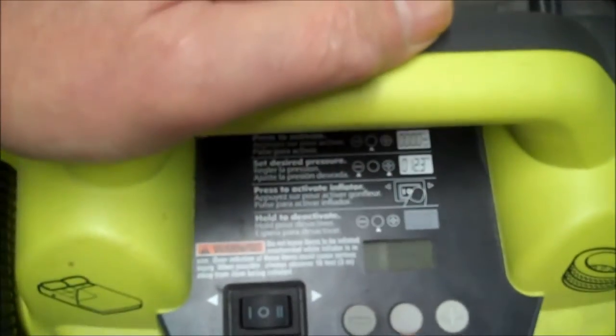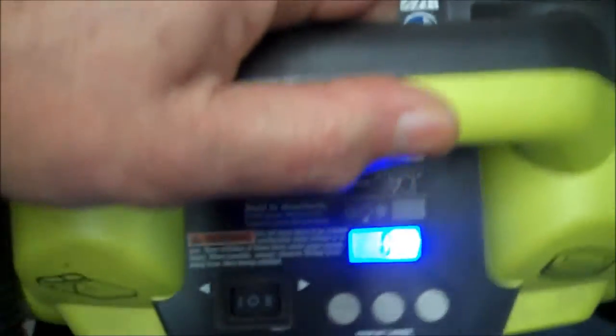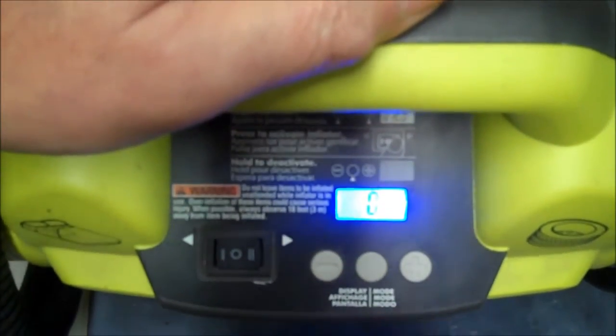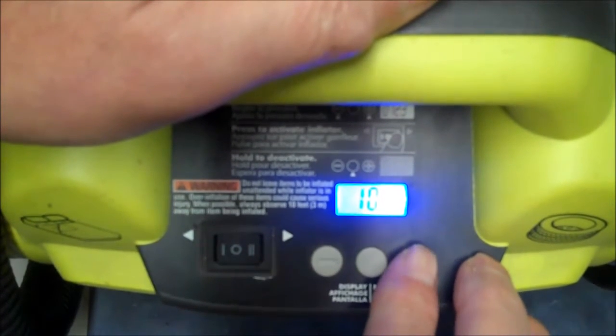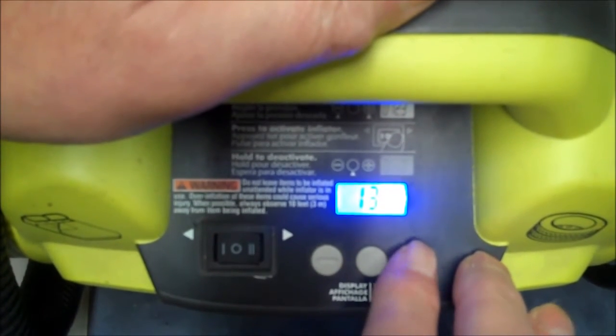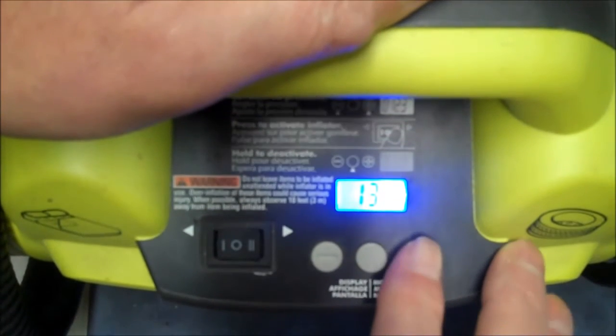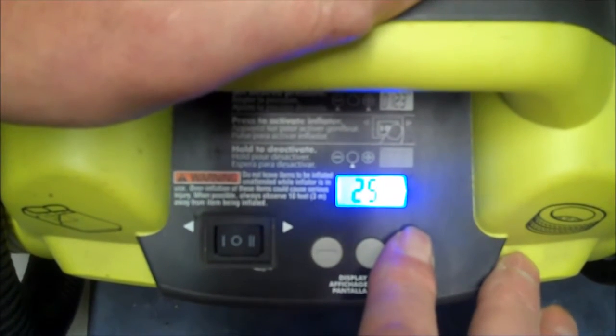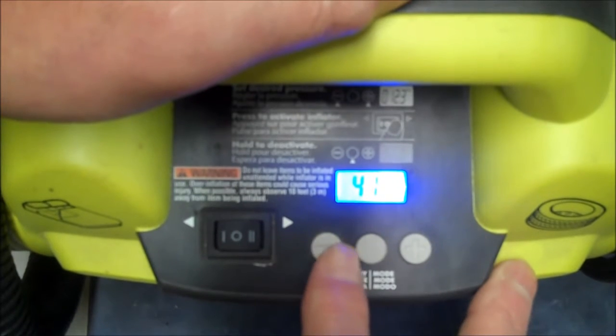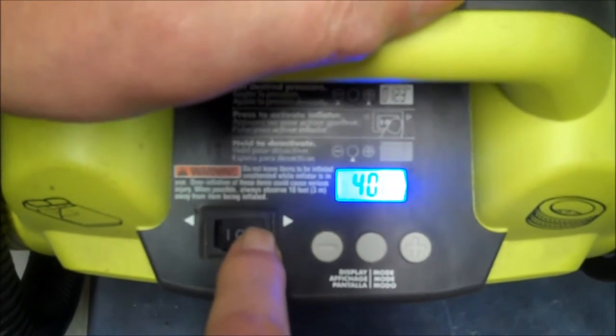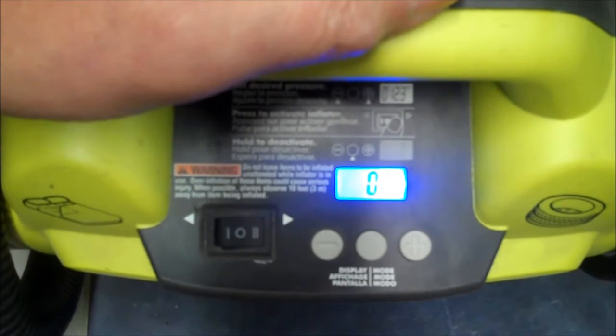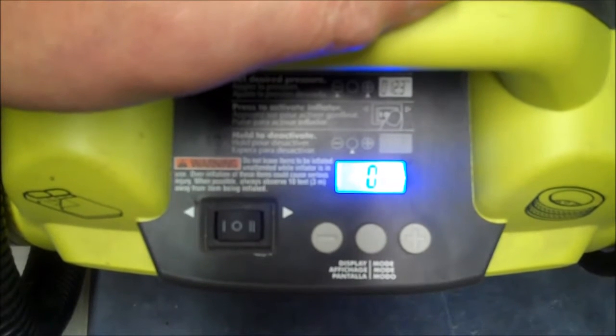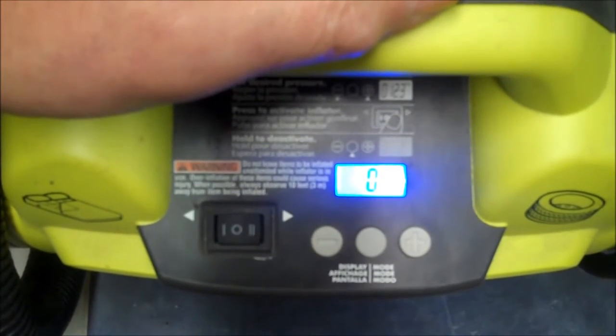Okay, so the first thing you do is hit the button and it turns on. Then you tell it how, say if I'm going to blow up my car tire and it's calling for 40 pounds. So I just hold this down, take it up to 40 pounds. Then I just hit the switch here. It starts inflating. And when it gets to about 40 and a half pounds, 41 pounds, it'll stop.